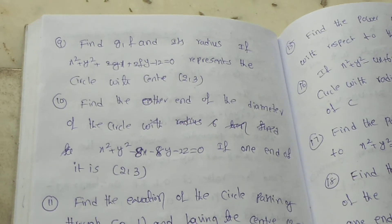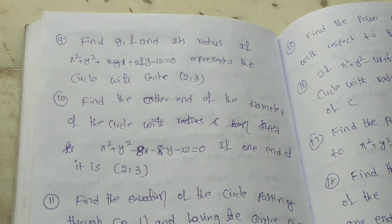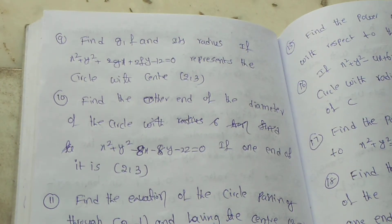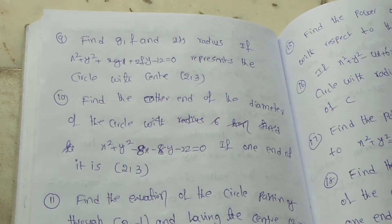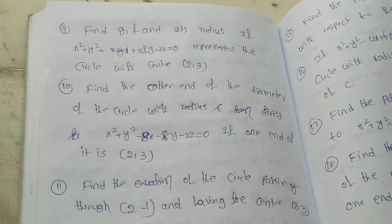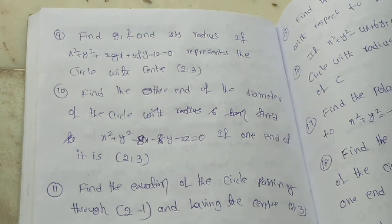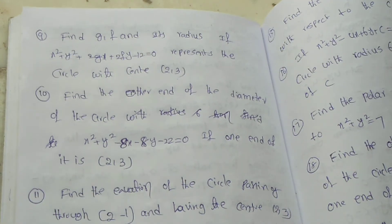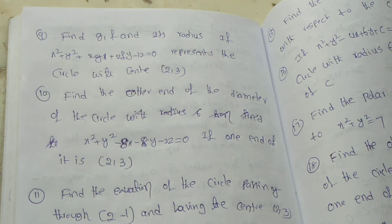Ninth question: Find g, f, and the radius if x square plus y square plus 2gx plus 2fy minus 12 equal to 0 represents the circle with center (2, 3).